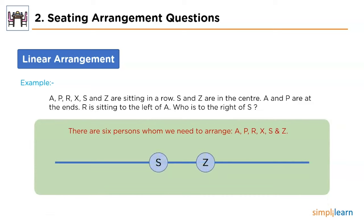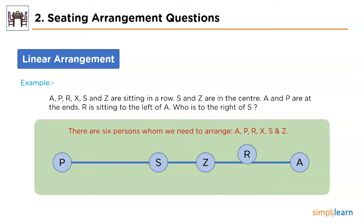S and Z are placed in the center. A and P are at the ends. The problem states R is sitting to the left of A, but as there is no left position available for A, we interchange the positions of A and P. Now we can add person R to the left of A. There is only one position left, so we place X there. With all persons arranged, we can conclude who is sitting to the right of S — and the answer is Z.